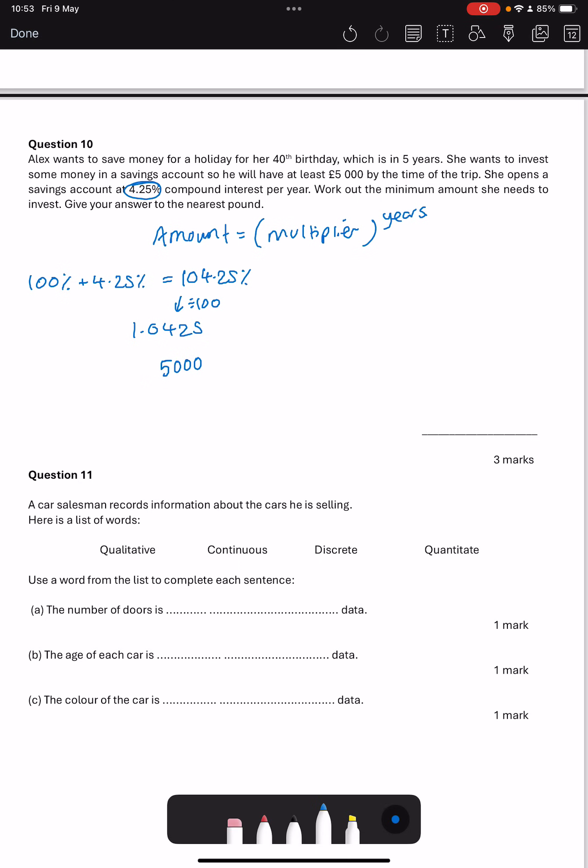She wants at least 5,000 pounds. So I want to have 5,000 is going to be smaller than my multiplier to the power of 5 because it's 5 years, times by the amount that's invested. And that's what we want to find. So we'll divide both sides by 1.045 to the power of 5, and that gives me 4,060.60 will be less than x. That means x has to be bigger than 4,060.60. And it's in the nearest pound so I want the next pound up because it has to be bigger than that. So 4,061 pounds.